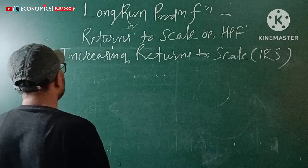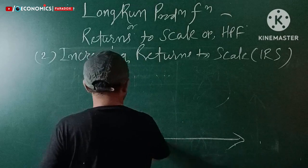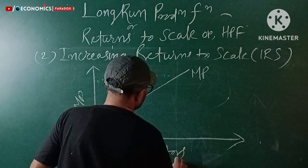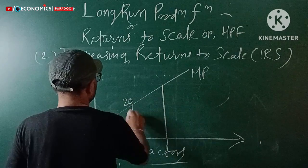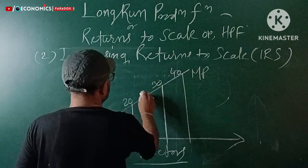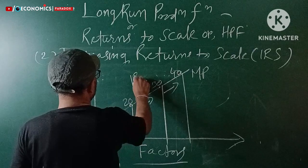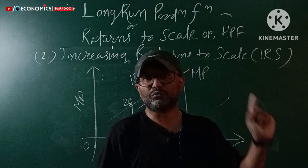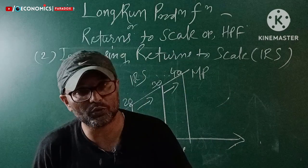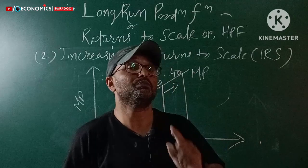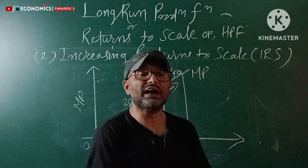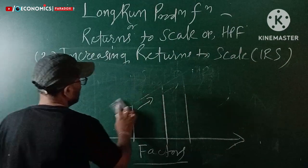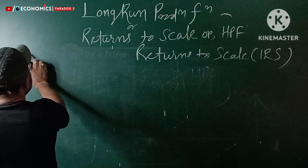For IRS, the marginal product (MP) increases. So the MP curve slopes upward from left to right. For CRS, the MP curve is parallel to the x-axis, but for IRS, the MP always slopes upward from left to right because output increases more than lambda times. This is a non-linear homogeneous production function with degree greater than one.